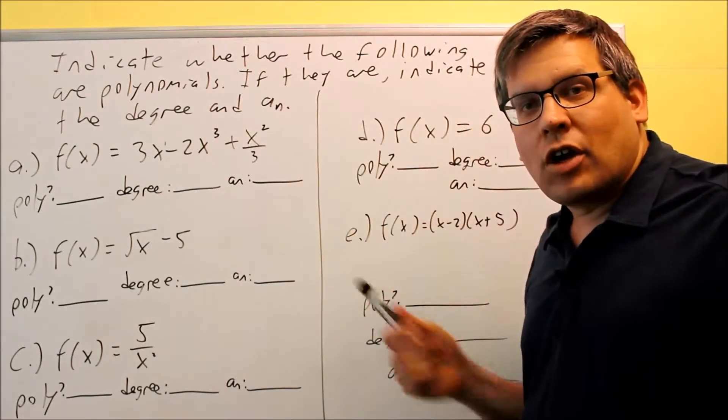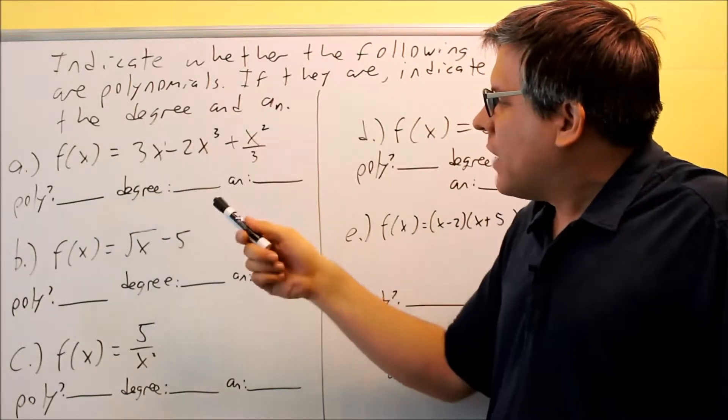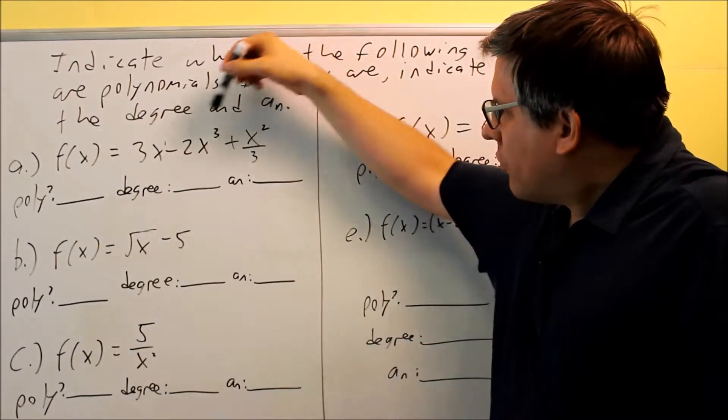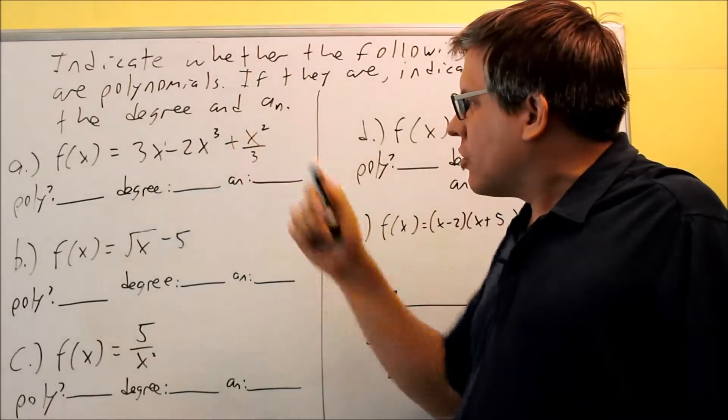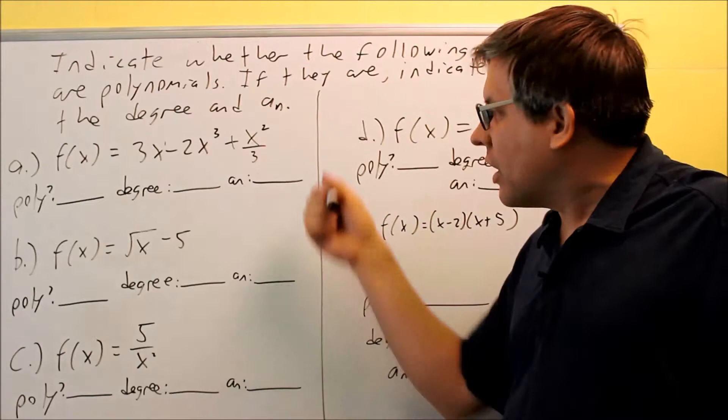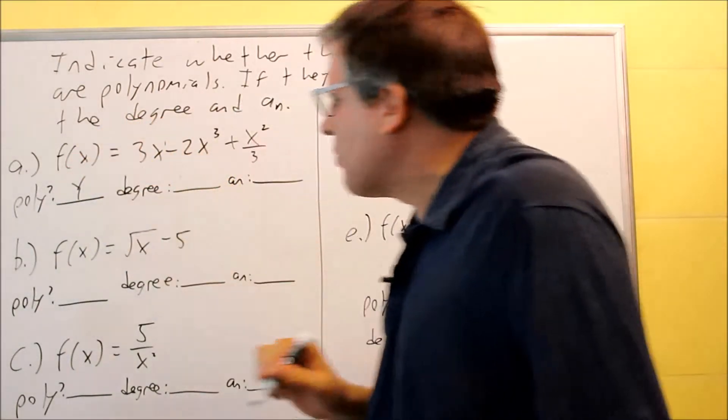The first one, 3x to the first power, negative 2x to the third. Okay, well, all the powers are integers, and they're all positive integers. We have no fractional powers. We have a fraction here, but it's not part of the exponent. That's okay. So is it a polynomial? Yes, this is. It is a polynomial.